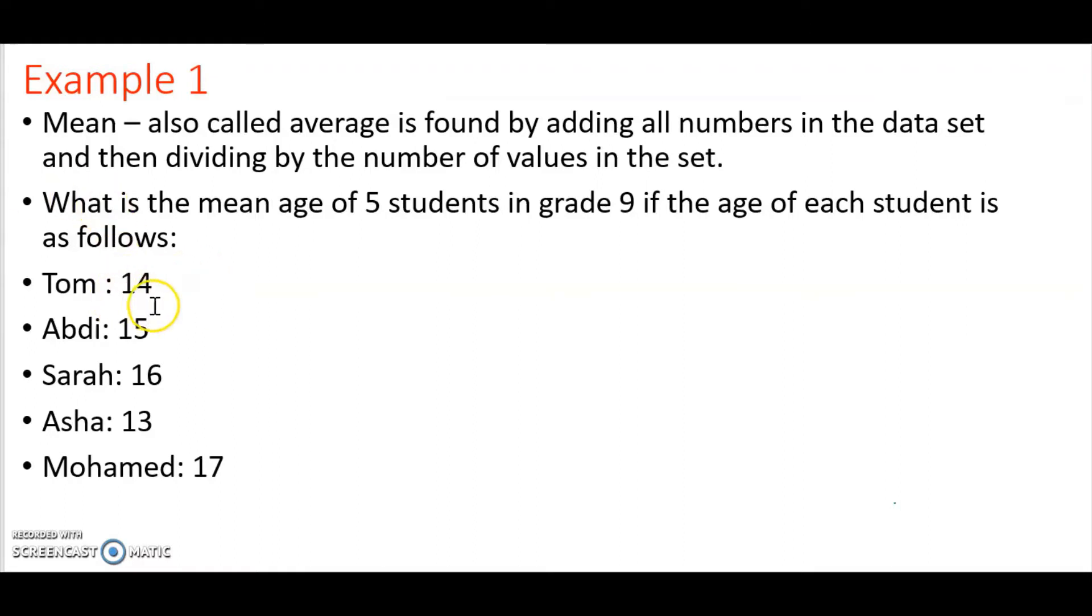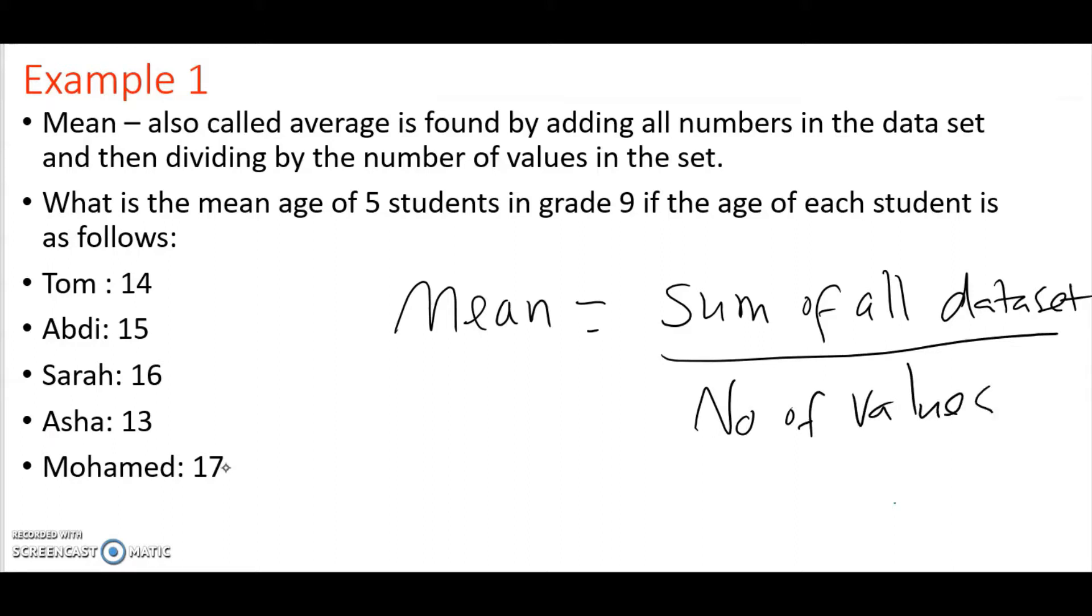If you have five students in a class and the age of each student is as shown here - Tom is 14 years old, Abdi is 15 years old, Sarah is 16, Aisha is 13 years old and Mohammed is 17 years old, and we are asked what is the mean age of these five students, then what we have to do is the mean equals the sum of all the data set and then you divide by the total number of values in the data set.